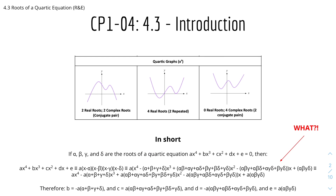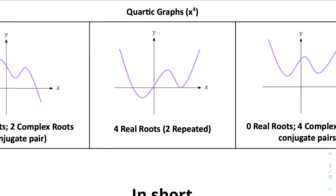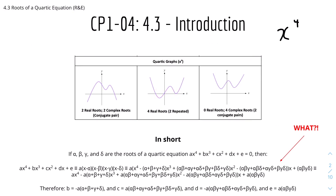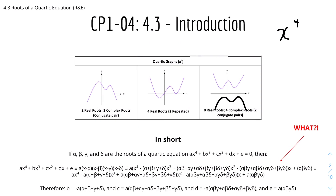Here we have some quartic graphs. Quartic basically means x, or any variable, to the power of 4. So quartic is degree 4, cubic is degree 3, and quadratic is degree 2. Here we have 3 possible graphs and 3 possible pairs of roots. In the first case, we have either 2 real roots or 2 complex roots — the complex roots are conjugate pairs — or we can have 4 real roots where the graph cuts the x-axis at 4 precise points. Those could be 2 distinct and 2 repeated points, or we could have 0 real roots and 4 complex roots forming 2 complex conjugate pairs.